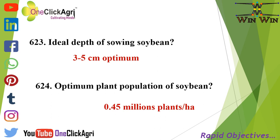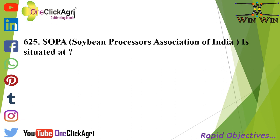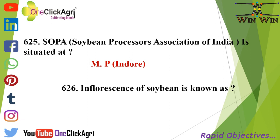The Soybean Processors Association of India (SOPA) is situated at Indore in Madhya Pradesh. The inflorescence of soybean is known as a raceme.